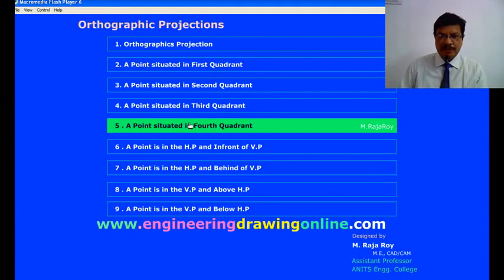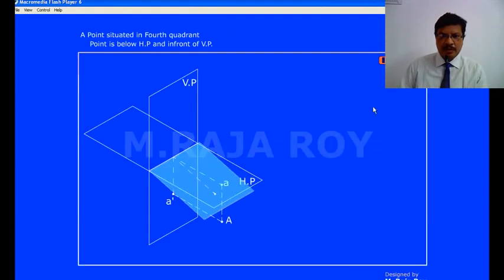When a point is situated in the 4th quadrant, 4th quadrant means observe this animation. Now observe here, the point is somewhere here.